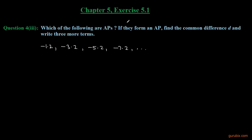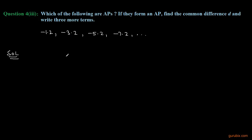Here is the third part of question 4 of exercise 5.1 of Chapter 5. This question asks us to check whether this sequence of numbers is an AP or not. If this is an AP, then we have to find out the common difference d, and we have to write three more terms. The given sequence is minus 1.2, minus 3.2, minus 5.2, and minus 7.2. Let us see how to solve this question — first we shall check whether this is an AP or not.